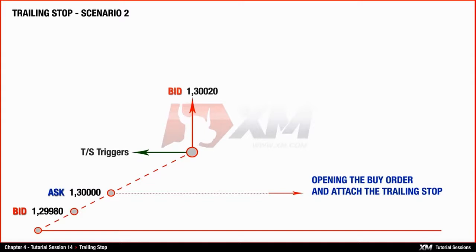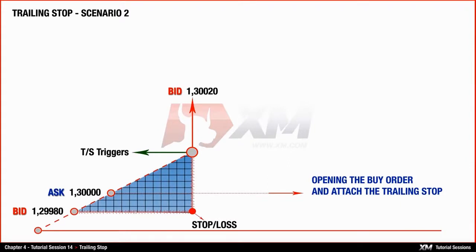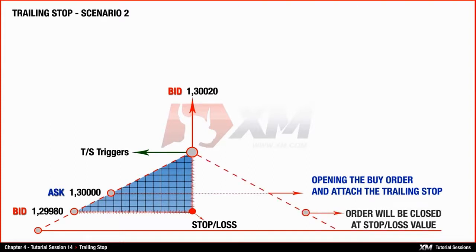The difference between 1.29980 and 1.30020 is exactly 40 points. The trailing stop has been set according to the closing price — in other words, the bid price of the buy order. As soon as the bid price reaches the level of 1.30020, the trailing stop is activated. This means that the trailing stop will lock your stop loss at the value of 1.29980. If at this point the market starts moving against your potential profit and reaches the value of 1.29980, your position gets automatically closed at a loss of 20 points, equal to 2 pips, as you opened it at a price of 1.3000.